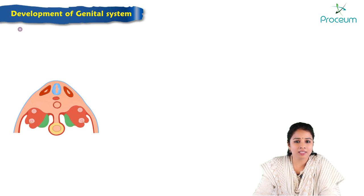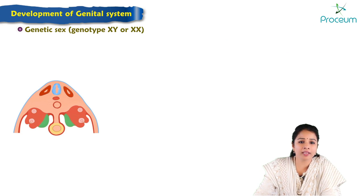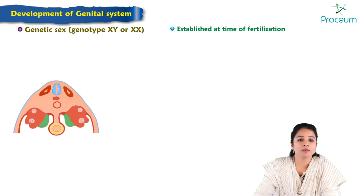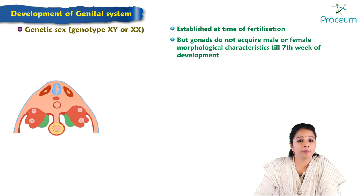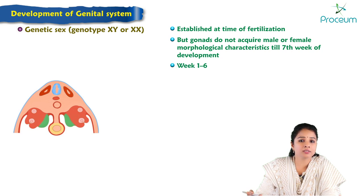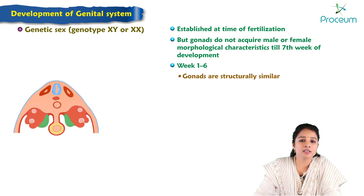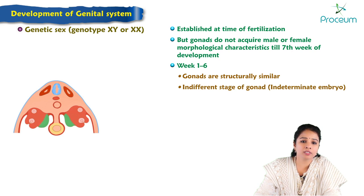Starting with the genetic sex, the genotype XY or XX of the embryo is established at the time of fertilization. But gonads do not acquire male or female morphological characteristics until the embryo attains the seventh week of development. The initial weeks — that is, weeks one through six — the gonads are structurally similar, and hence this is called the indifferent stage of the gonad or indeterminate embryo.